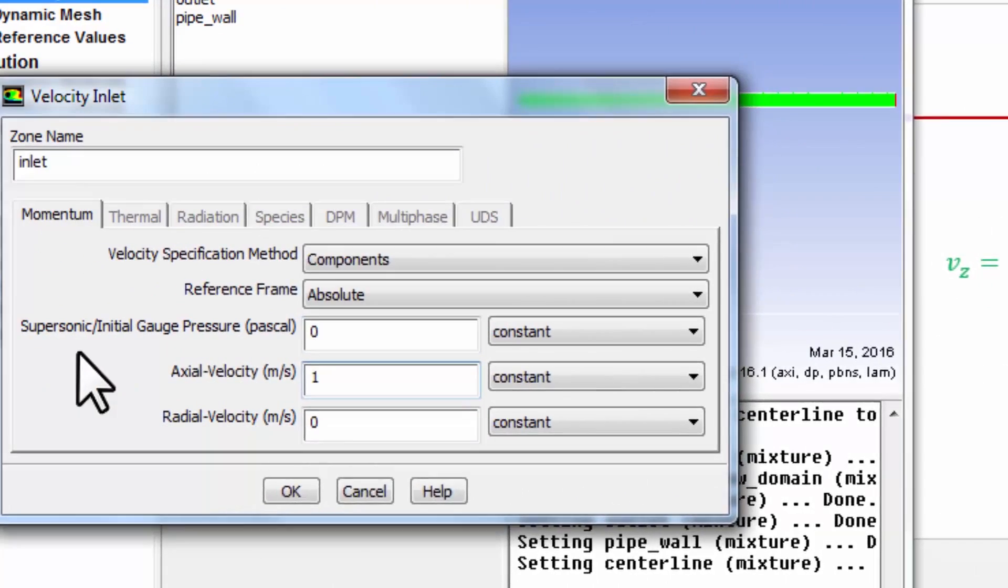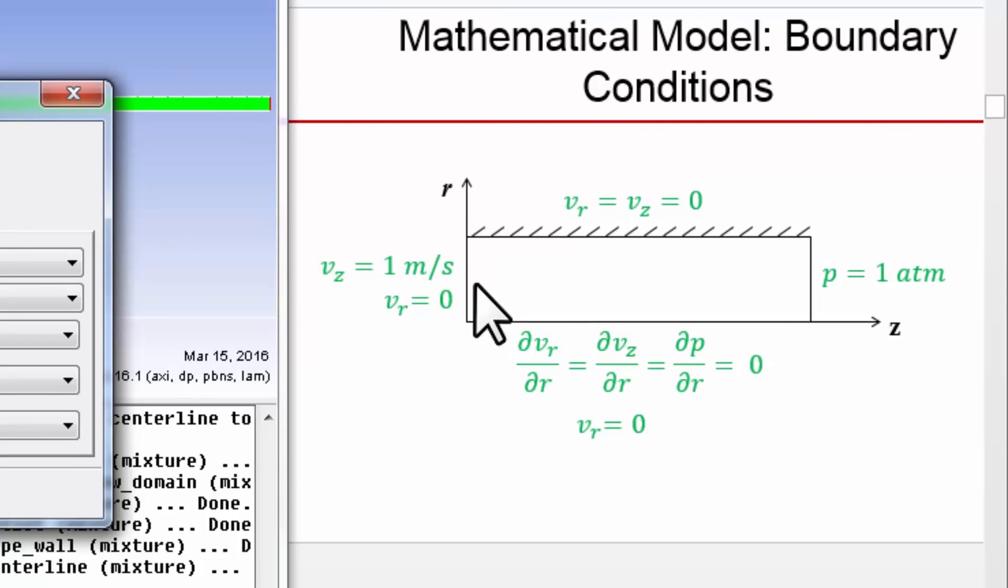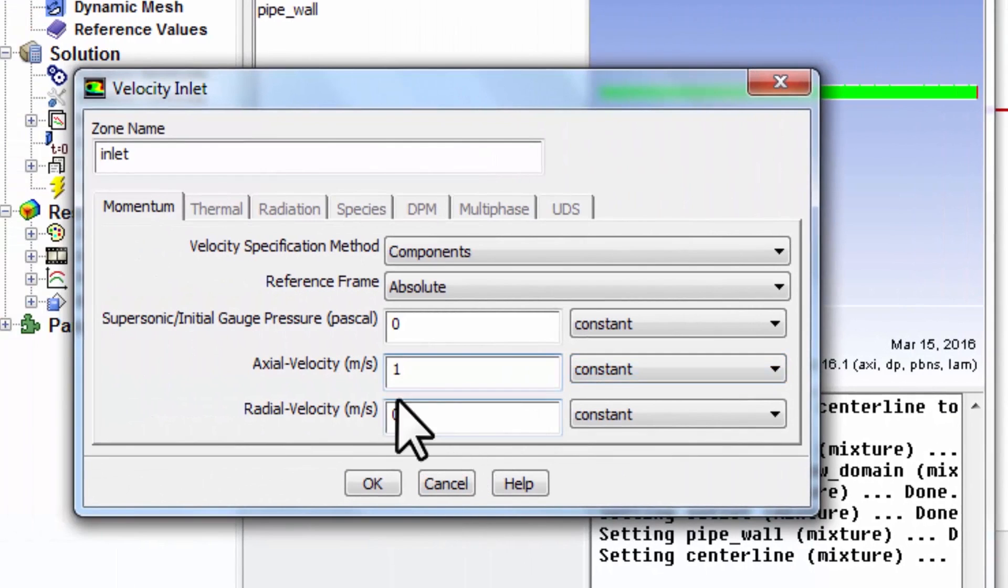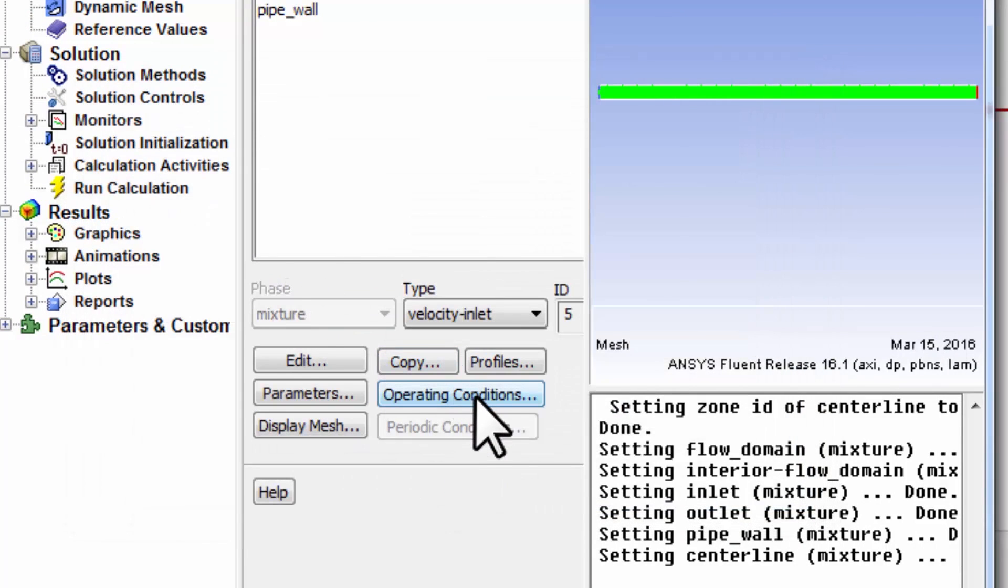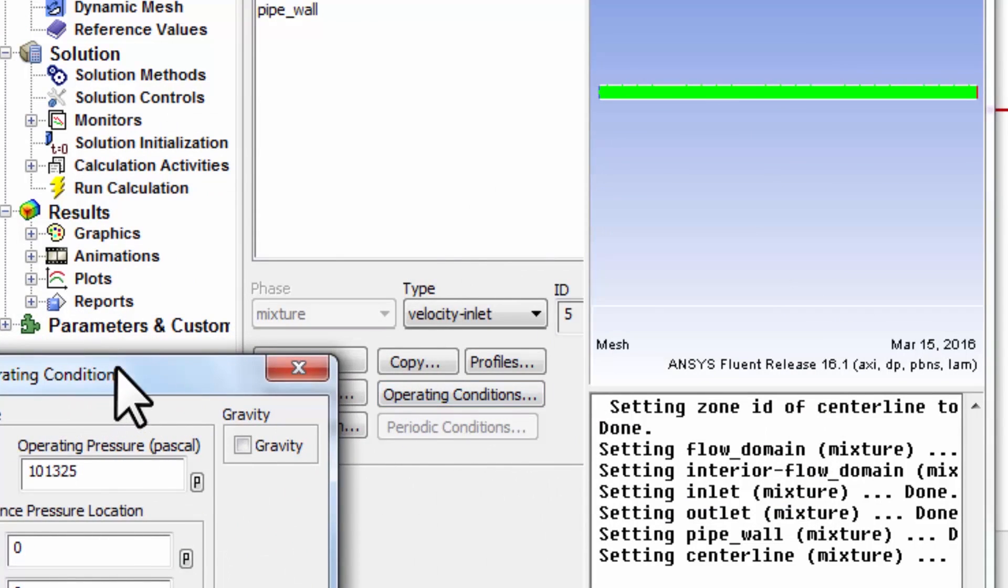Ignore supersonic, everything's low speed here and in fact incompressible. There's an initial gauge pressure—that's an initial guess for the gauge pressure at the inlet. That'll get updated by the solver, it's not really a boundary condition here. We can set the gauge pressure to 0 and check the operating pressure. That's under operating conditions.